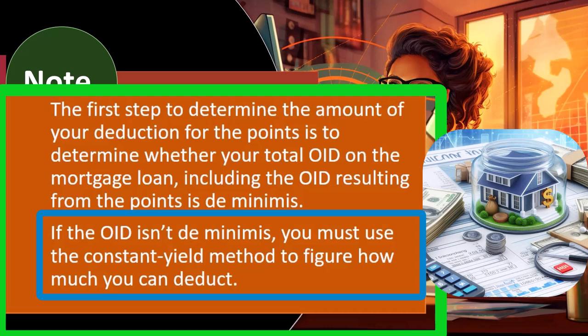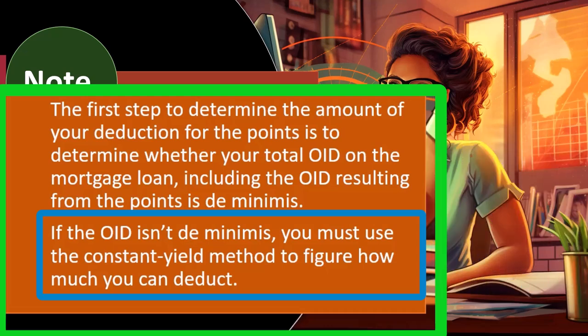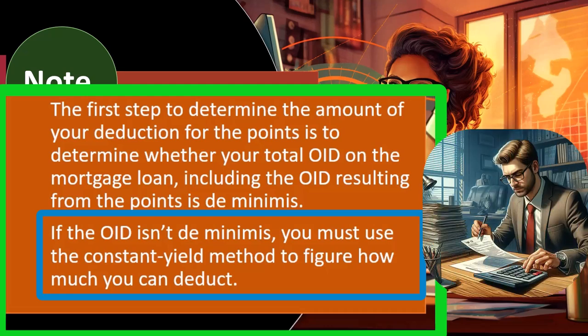The first step to determine your deduction for points is to determine whether your total OID on the mortgage loan is de minimis — meaning it's small enough that you don't need the more complex process. In the tax code, when you're forced into accrual-type calculations, the question is whether that complexity is worth the time if the dollar amount is small. If the OID is de minimis, you can use simplified methods. If not de minimis, you must use the constant yield method.